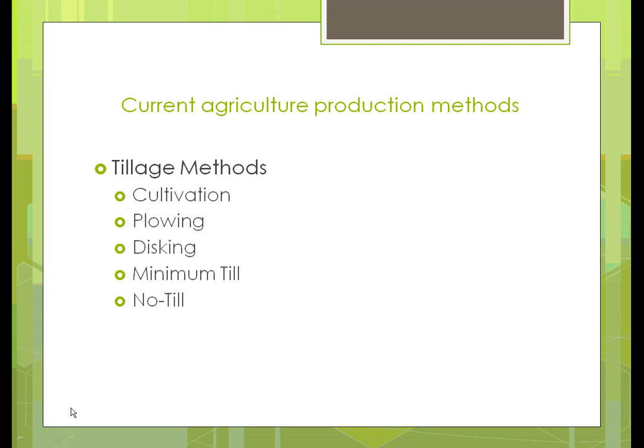Some of the current tillage methods include cultivation — after plants are planted, they go in to control weeds using what's called a chisel plow, a V-shaped piece of equipment. It goes between the rows of corn or soybeans and pulls the weeds out of the ground. You can only do this until the crop gets about a foot high, at which point the crop tends to crowd out the sun from reaching the ground, preventing weed seeds from germinating.